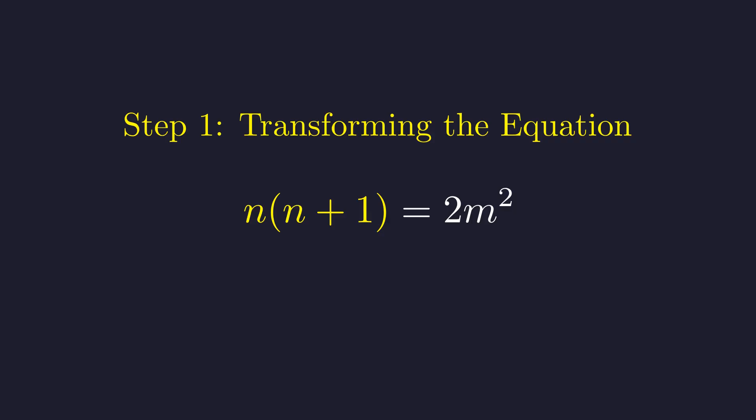The standard approach for this problem involves a clever algebraic manipulation to complete the square. To do this, we will first multiply by 4. Multiplying both sides by 4 yields 4n times the quantity n plus 1 equals 8m squared.